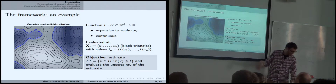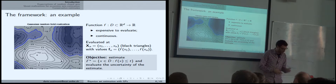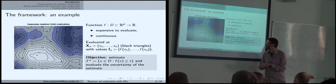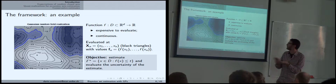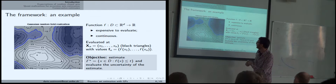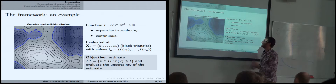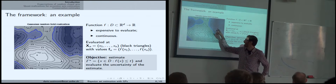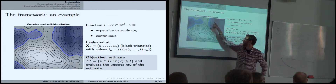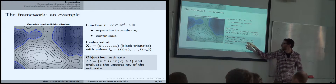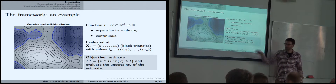The running example I'll use is even simpler. It's an example where all the assumptions we make are known to be true because we take a Gaussian random field realization, which is not really expensive to evaluate, but we assume it is and we know it only at the black triangles. We are interested in recovering the blue region, which again is an excursion below a certain value.